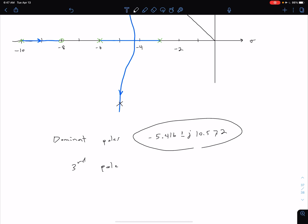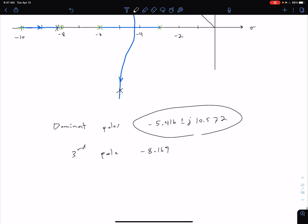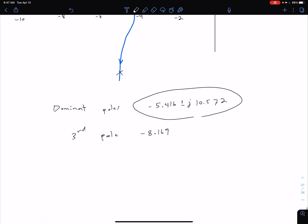So our third pole location ends up being at negative 8.169. So very close to this zero here. And so what we can say then, is that we approximately have that canceling out with a zero. So approximately cancels with our zero. And what that means is that our second order approximation is appropriate.